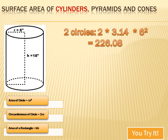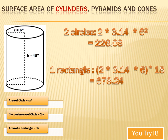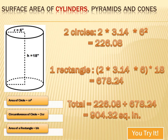Now let's tackle the lateral side. There's one rectangle that can be deconstructed from that lateral side of the can, and I need to multiply the base times the height to get its area. I know the height is 18 inches, and the base is the circumference of the circular base — 2 pi r. So if I multiply 2 times pi times 6 times 18, I get 678.24. Now I just add all those up: 226.08 plus 678.24 equals 904.32.